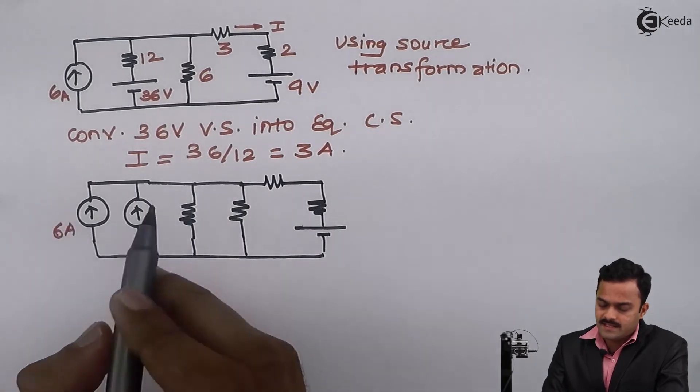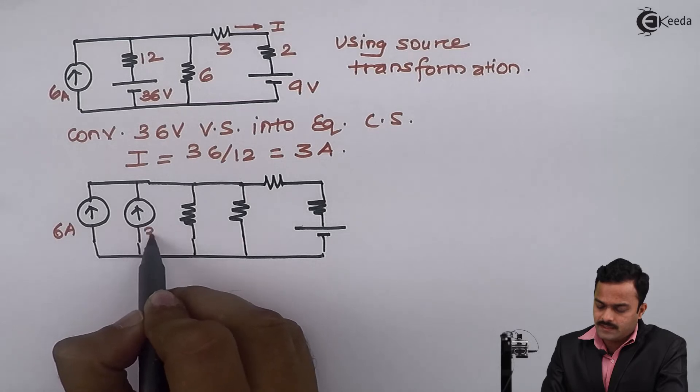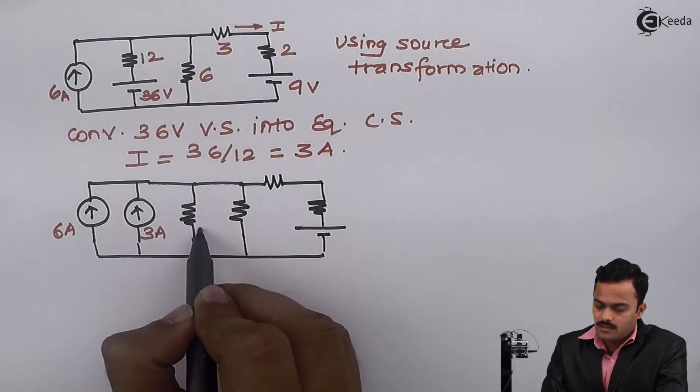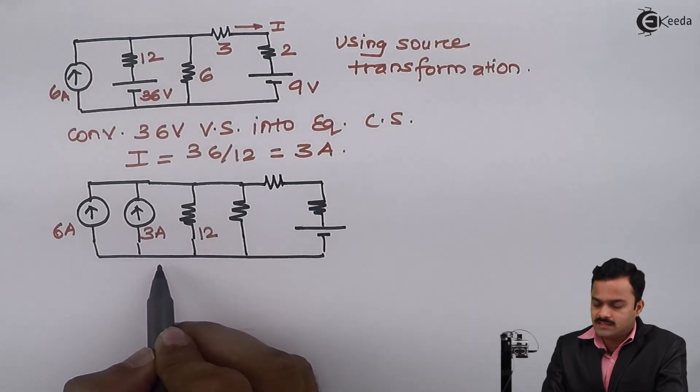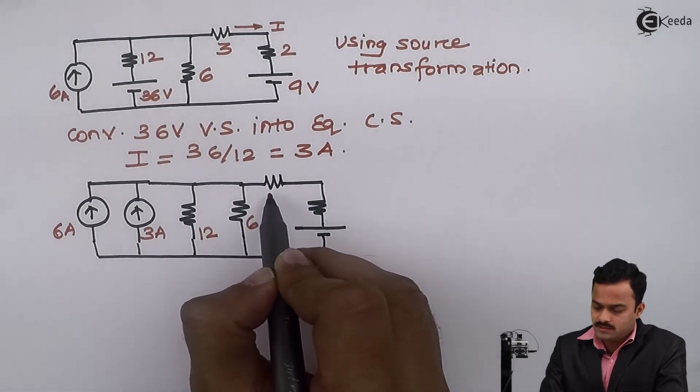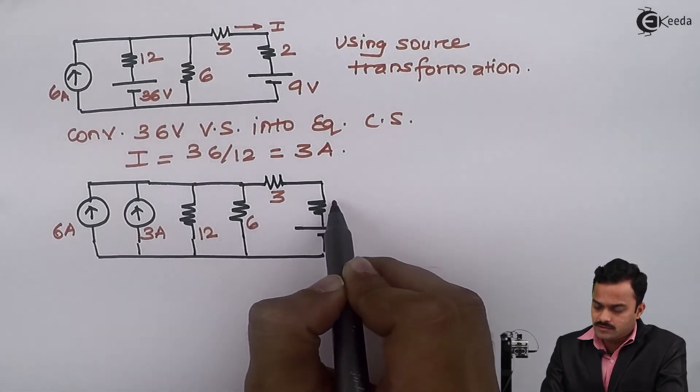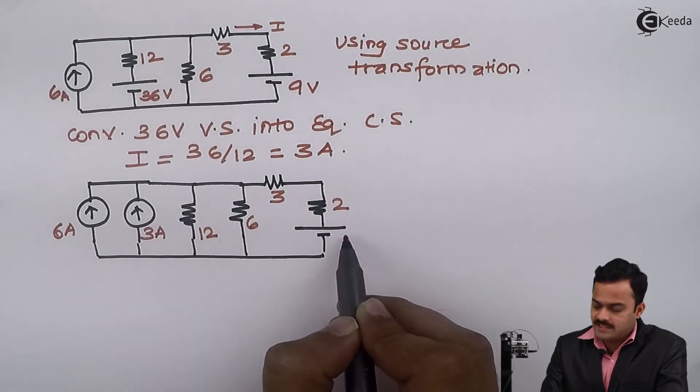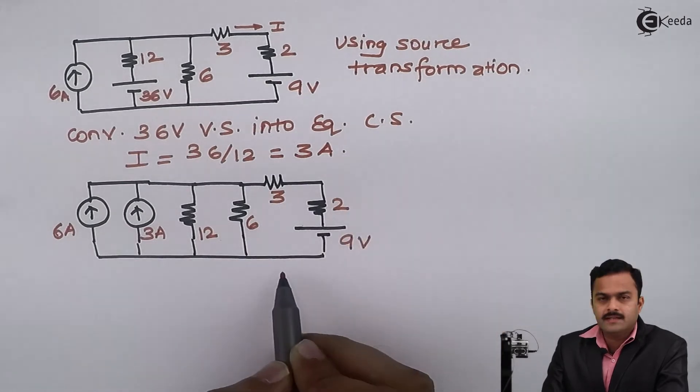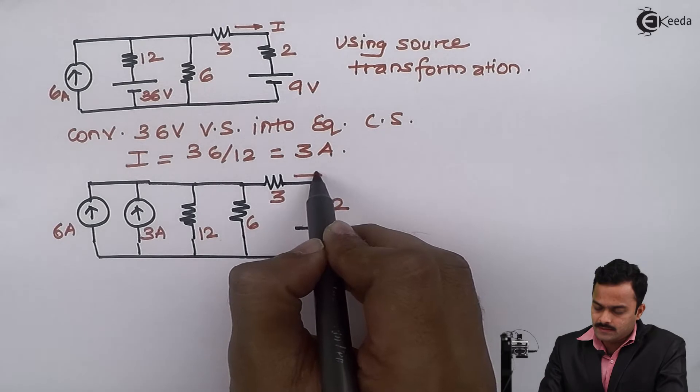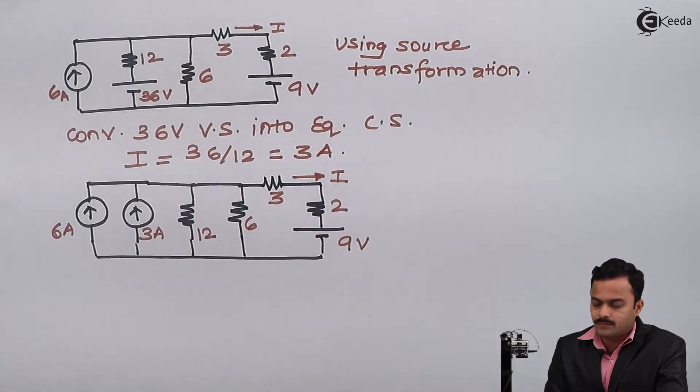6 amperes as it is. Here I will get a 3 ampere current source along with a 12 ohm resistor. 6 ohms not touched, 3 ohms not touched, 2 ohms remains as it is, and the 9 volt battery will be as it is. This is the current we are supposed to find.